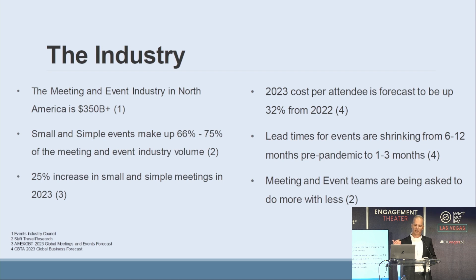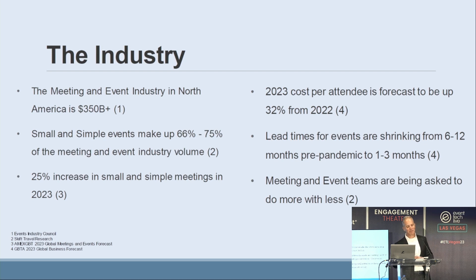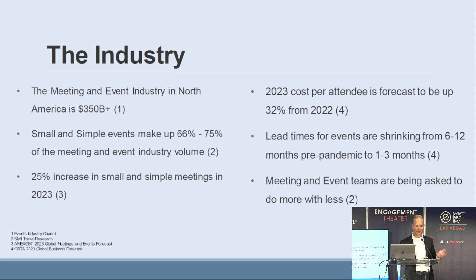Costs are rising, and lead times for events are shrinking while event teams are being tasked to do more with less — that's like gospel in our industry. With over $350 billion in North American spend and over 50% of that in small events, almost all of the tasks associated with these events are executed with universal technology like Excel, email, and Word, instead of community or connective technology. It's ripe for new efficiencies.